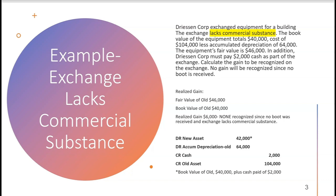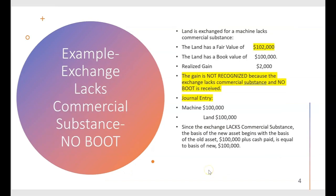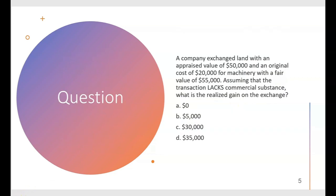Key note: if there's a realized gain but cash is paid, you probably won't recognize the gain. Next example: land is exchanged for a machine; the exchange lacks commercial substance. The land has a fair value of $102,000 and a book value of $100,000, so there's a realized gain of $2,000. But since no cash is received, the gain is not recognized. The journal entry credits the old land at $100,000 and debits the new machine at $100,000 — book value of old plus cash paid of zero.